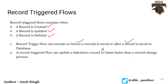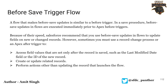That 10x speed compared to process builder or workflow rules applies whenever we are trying to update the same object — the same record which is being created or updated. In that case we must go with the before-save record-triggered flow, and that is what we will talk about in this video.